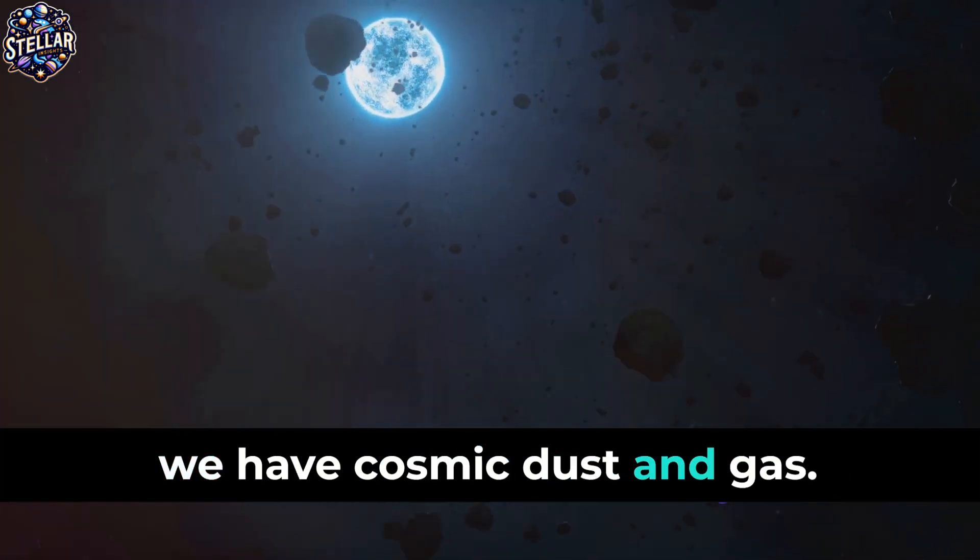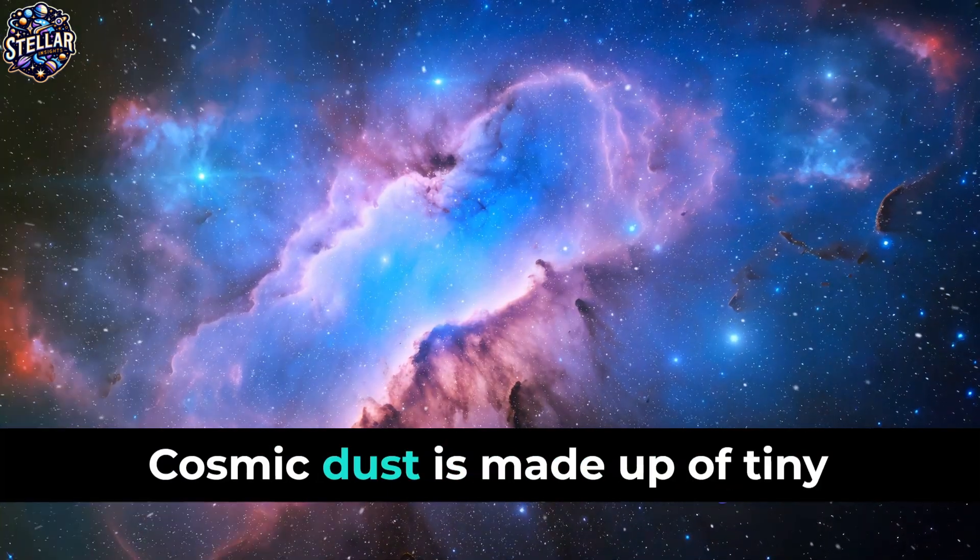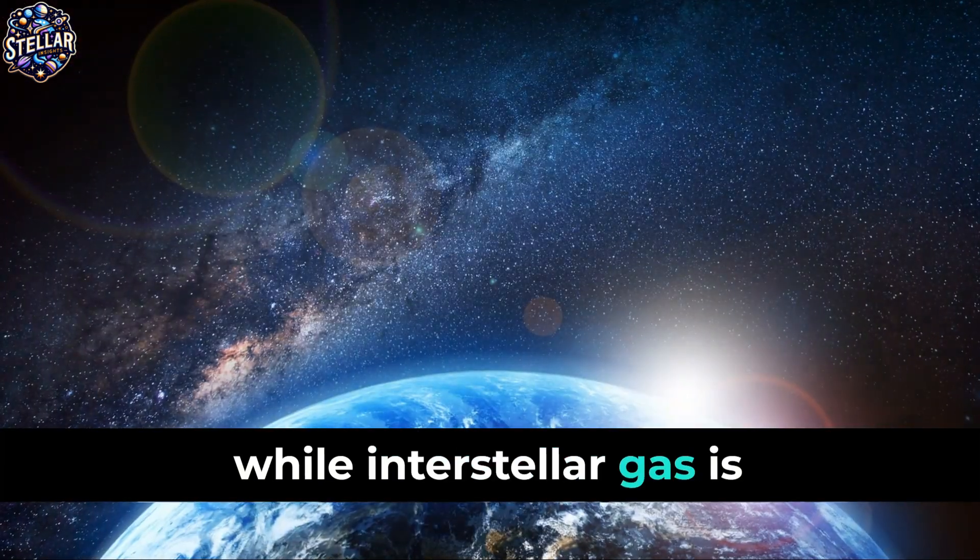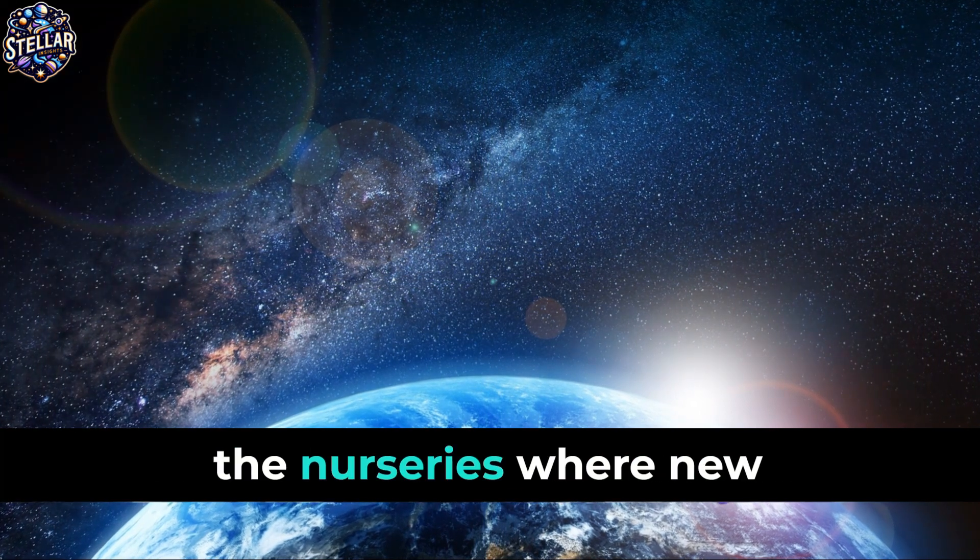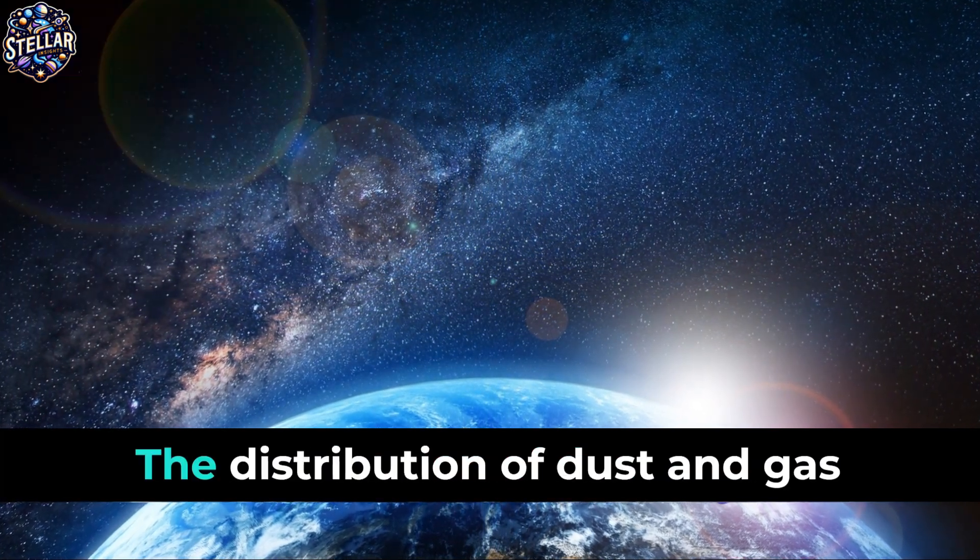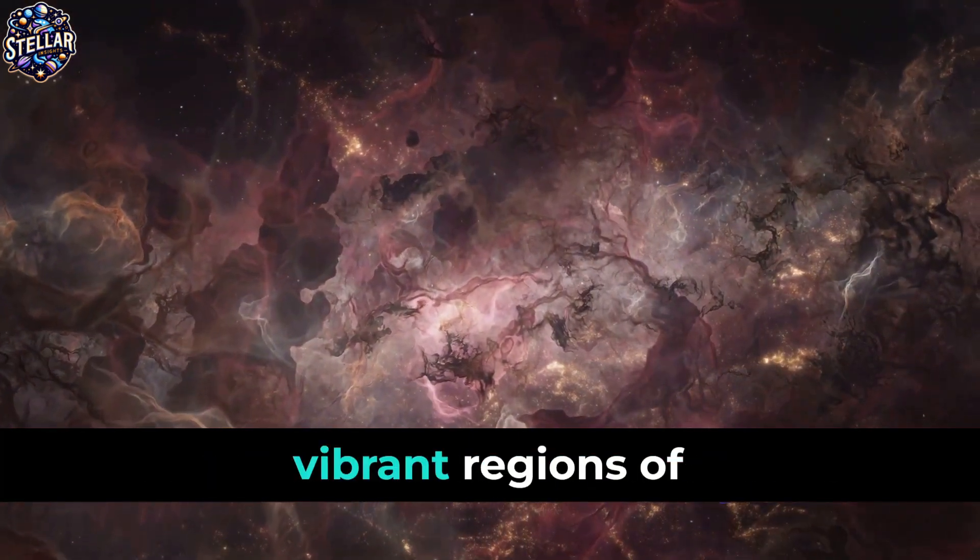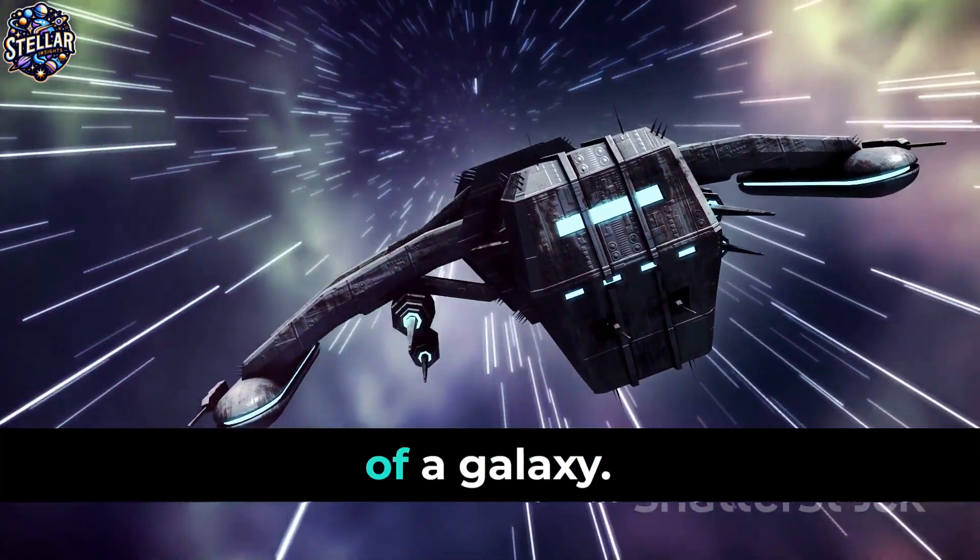Next, we have cosmic dust and gas. These aren't your typical household dust or stove gas. Cosmic dust is made up of tiny particles of solid matter, while interstellar gas is largely composed of hydrogen and helium. Together, they form nebulae, the nurseries where new stars are born. The distribution of dust and gas can create dark patches or vibrant regions of star formation, adding to the visual complexity of a galaxy.